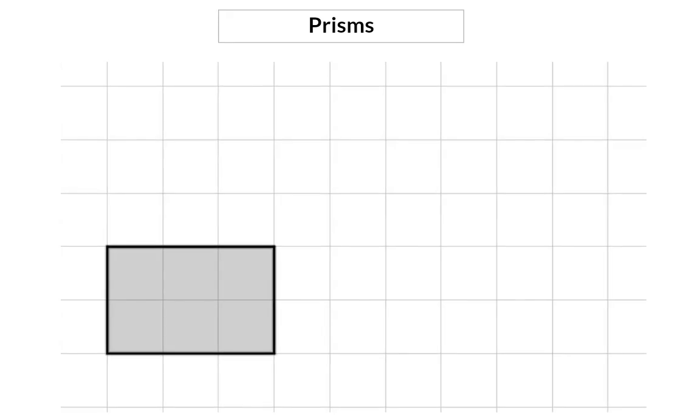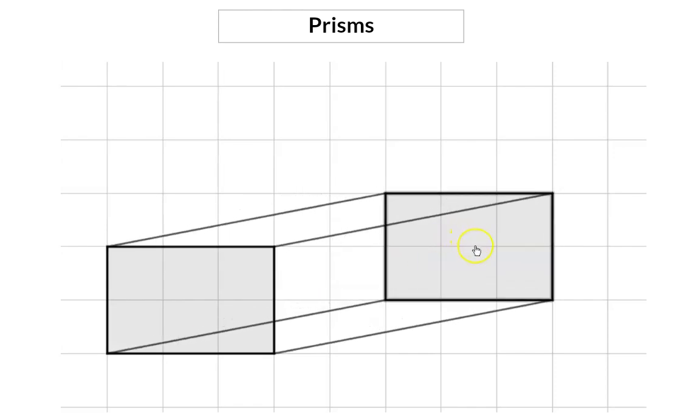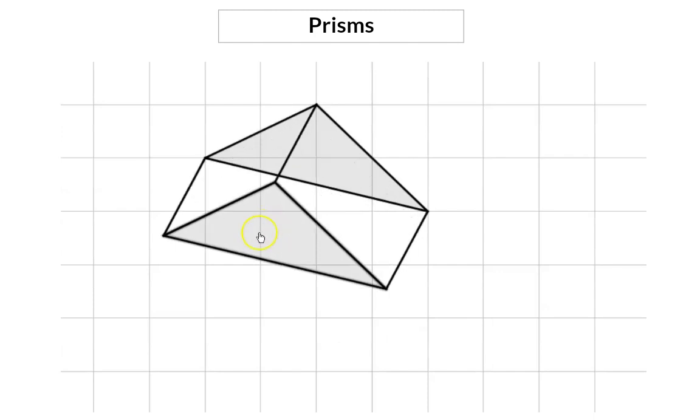To form a prism, a two-dimensional shape is stretched in one direction to form a three-dimensional shape with two identical shapes on either side. These two identical shapes can be any shape you like. We are, however, going to focus on specific ones.